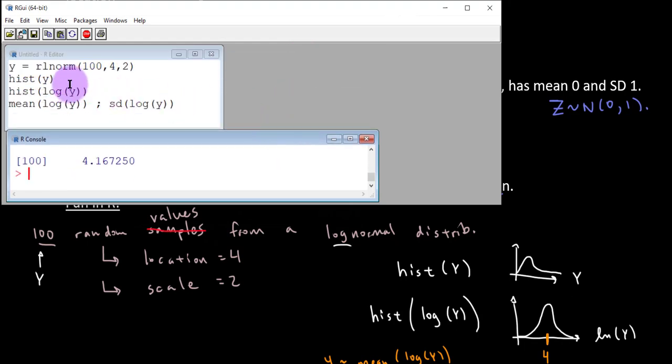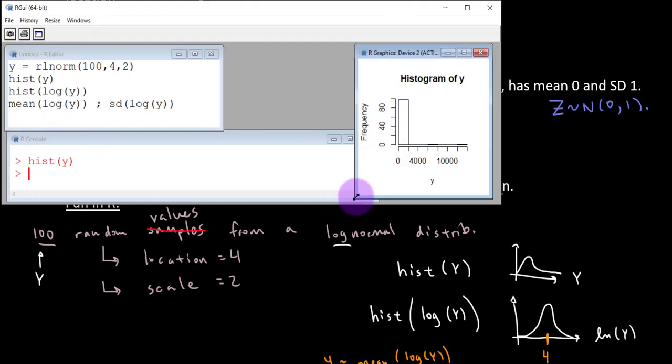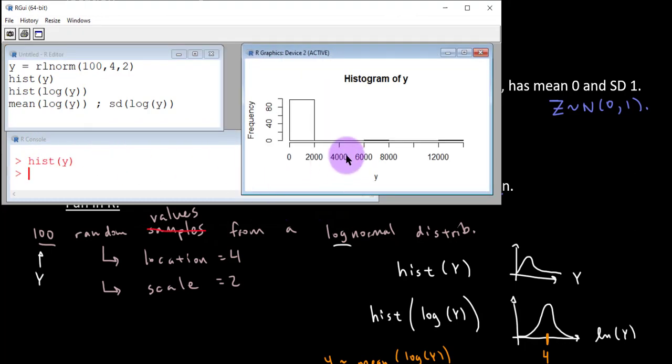These are probably going to be skewed. Okay, let's take a hist of Y. And yes, indeed, it appears to be a pretty skewed distribution there.